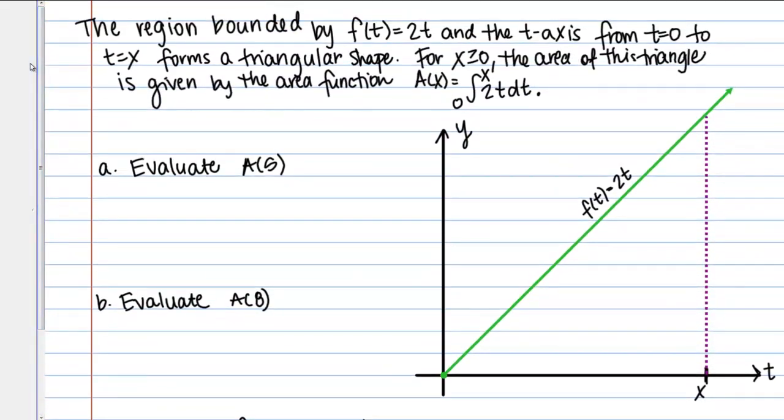Let's try to make sure we understand what's going on here. We have this function f(t) = 2t which is shown in my picture in the green line. This is just a line of slope 2.